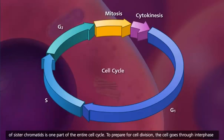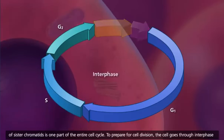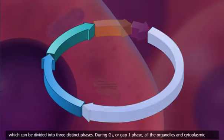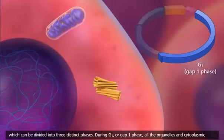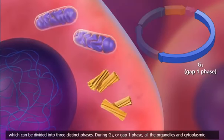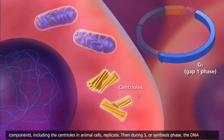To prepare for cell division, the cell goes through interphase, which can be divided into three distinct phases. During G1 or GAP1 phase, all the organelles and cytoplasmic components, including the centrioles in animal cells, replicate.